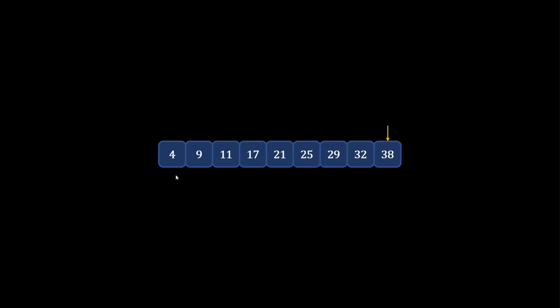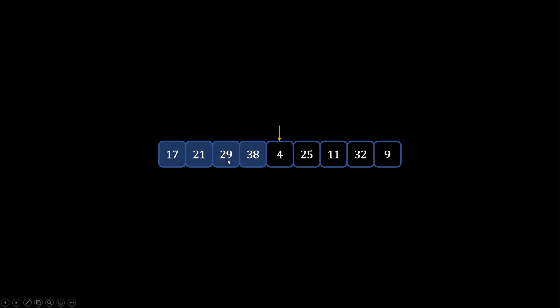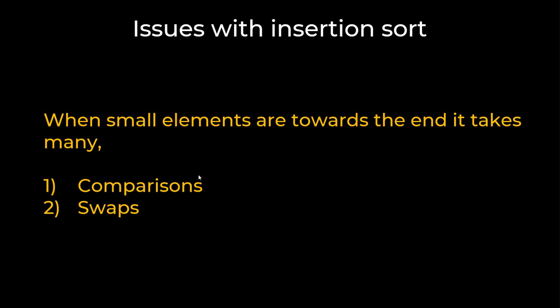But one problem with Insertion Sort is - think about when you want to put 4 into the sorted array. You start comparing from 38, which is greater than 4, then 29, also greater, then 21, then 17, and finally you put 4 at the front. You have to do a lot of comparisons, and when you put 4 there you're also swapping many elements. That's the disadvantage of Insertion Sort when smaller elements are towards the right-hand side.